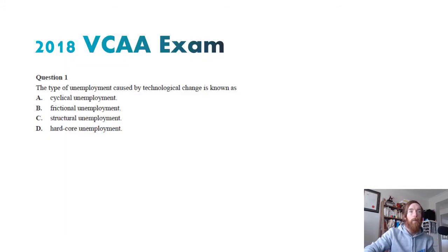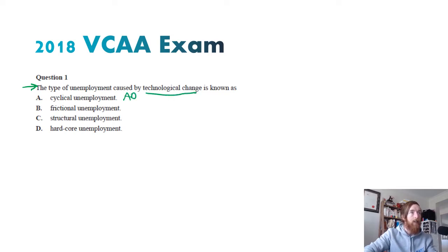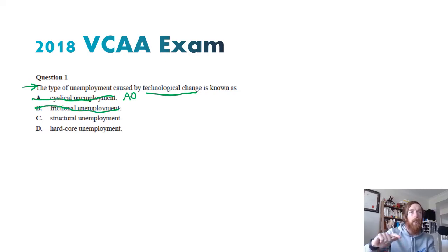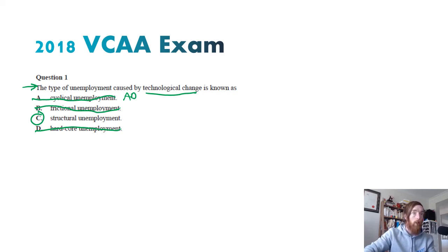Question one — relatively easy by comparison. The type of unemployment caused by technological change is known as: we can rule out cyclical unemployment because that's AD focused and technological change is an aggregate supply side factor. Frictional unemployment is the time spent between jobs, so that's not it. Structural unemployment can be caused by businesses cost cutting, employing technology, closing, etc. Hardcore unemployment is when people become discouraged from applying for jobs. So the answer is C — structural unemployment.